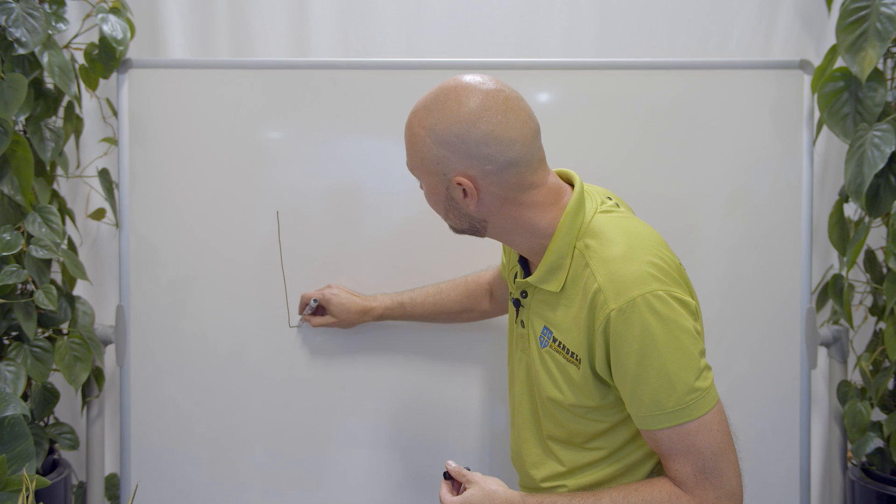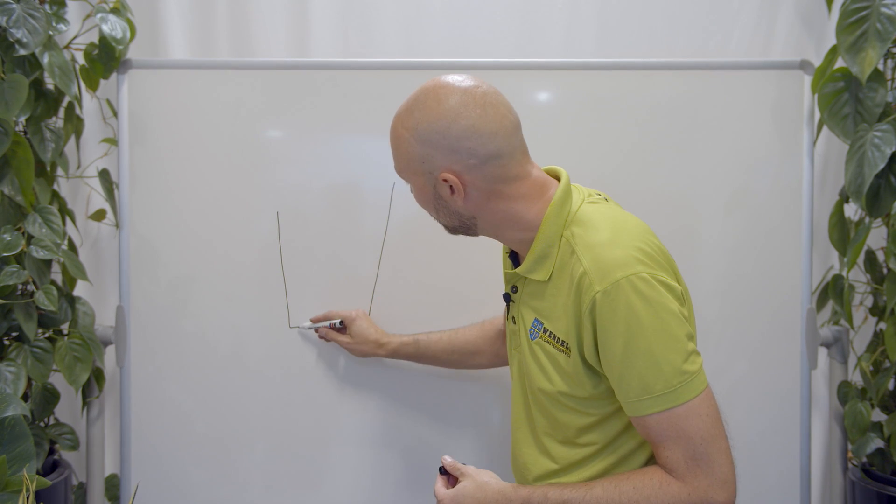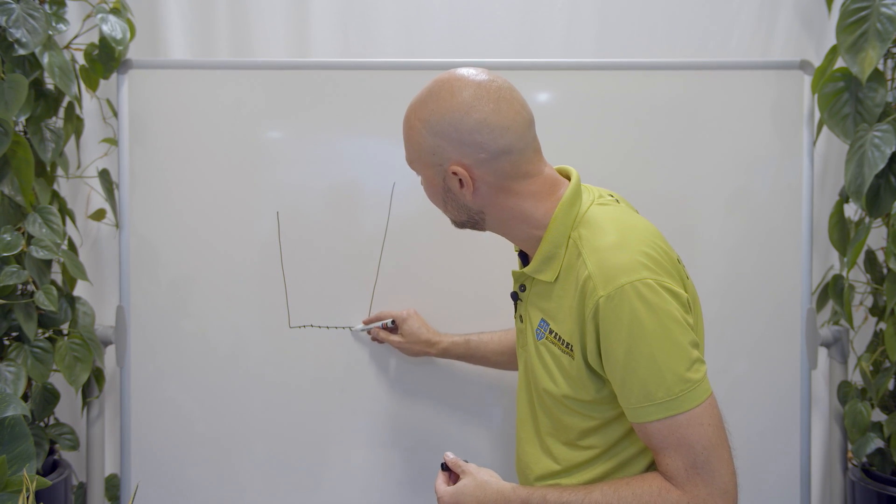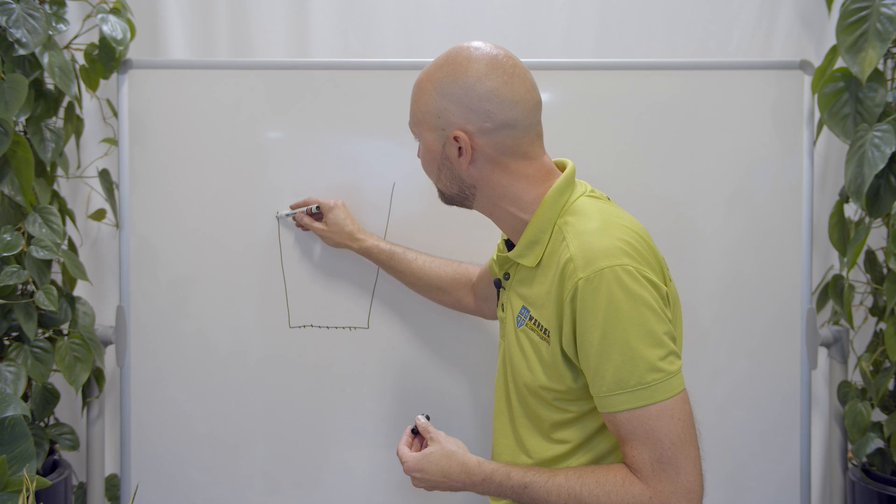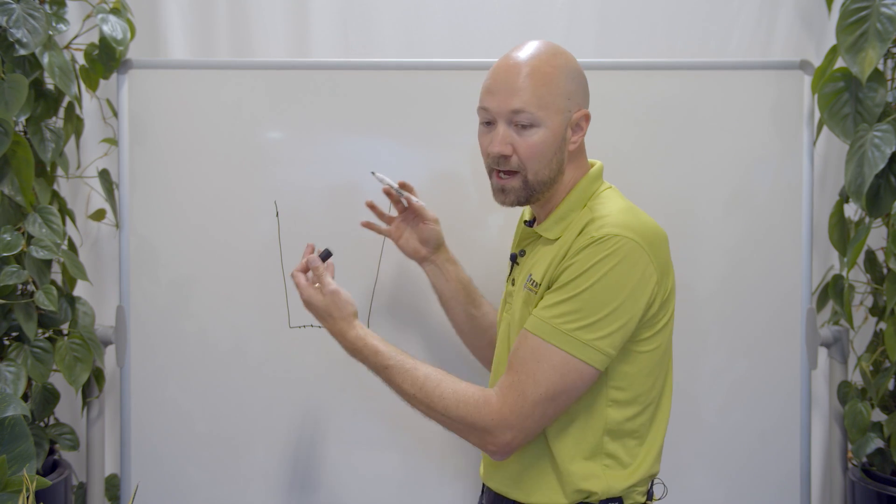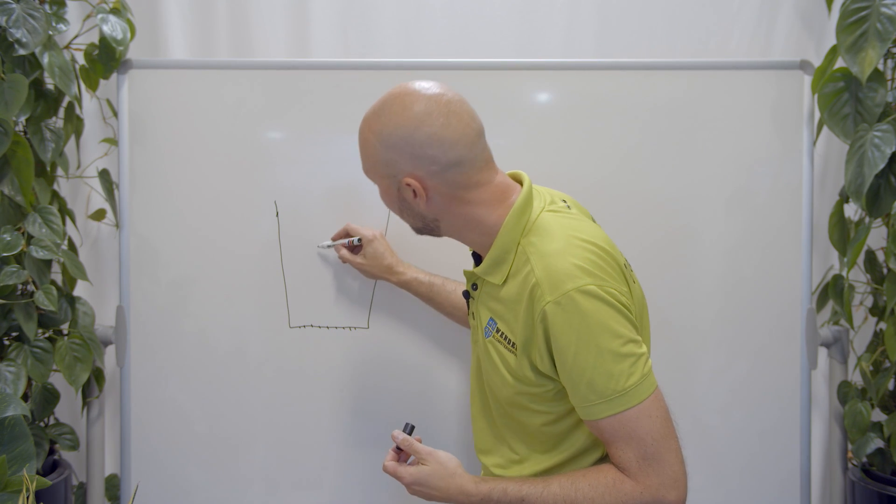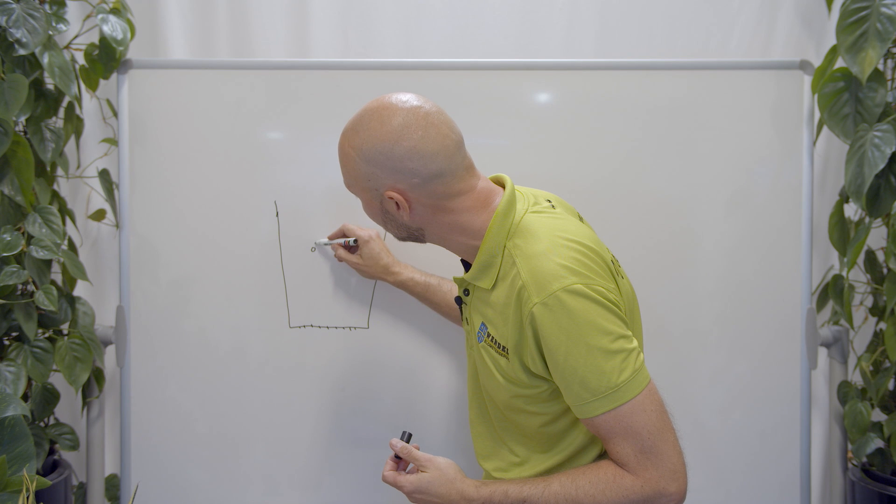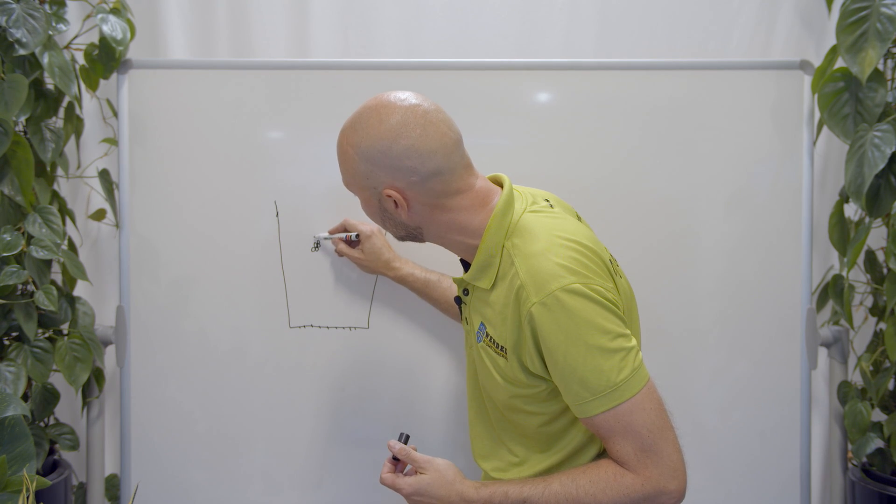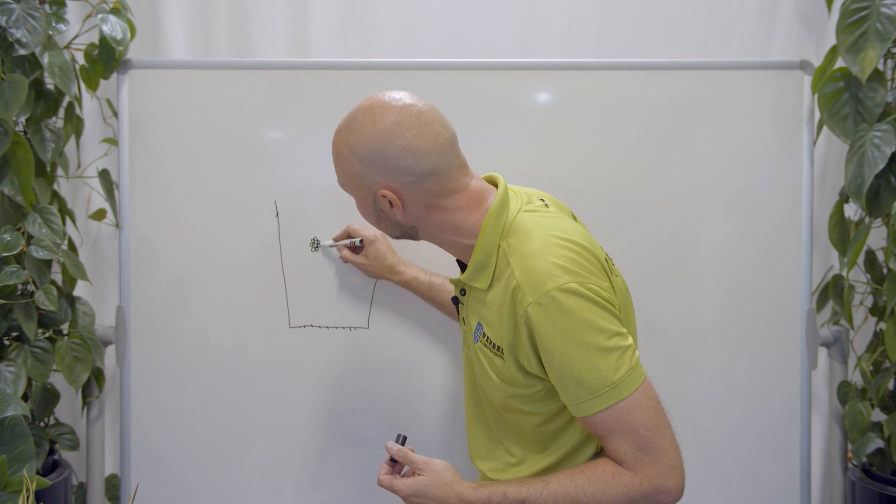Now if we have our pot here. And of course we have holes in the bottom here. So the excess water can fall out. If we enhance this a little bit. We have a lot of small grain sizes.